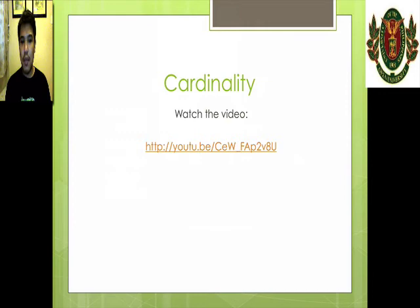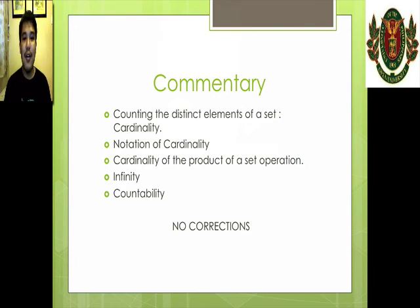Okay, here's the last video. It's about cardinality. So please press pause now. Okay, assuming that you resumed, let's go to the commentary. He talks about counting the distinct elements of a set, which is called cardinality. He also taught us how to do that, right? And he also told us about how to notate cardinality, which are two bars where the name of the set is in between the two bars. And then he also talked about cardinality of products of set operations, or the cardinality of set operations. He talked about infinity, which is usually applicable to universal sets like integers and real numbers.